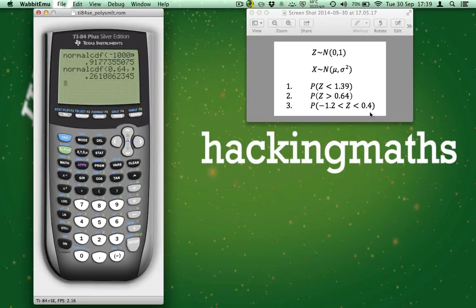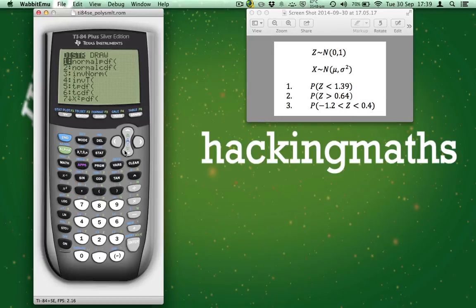So, did you try it? Let's see if you got it right. Press 2nd, and then Vars to take us back to the distribution menu. Scroll down to NormalCDF, and press Enter. Our lower boundary will be minus 1.2. Make sure you choose the correct minus. Our upper boundary will be 0.4. And our mean and standard deviation remain the same as 0 and 1, respectively.